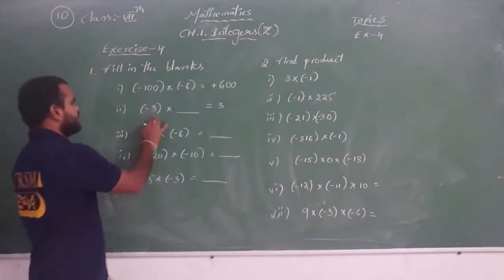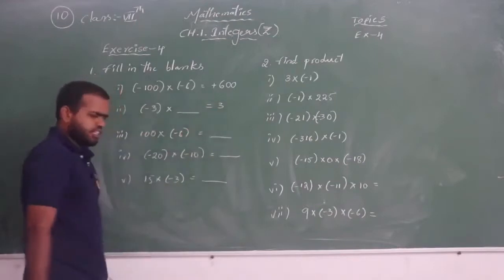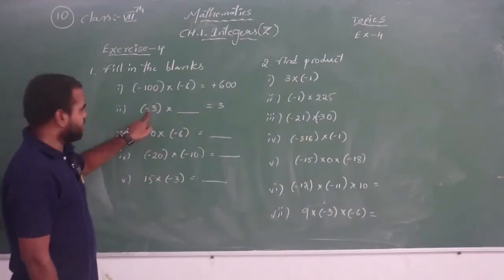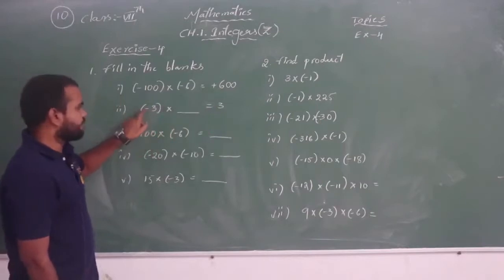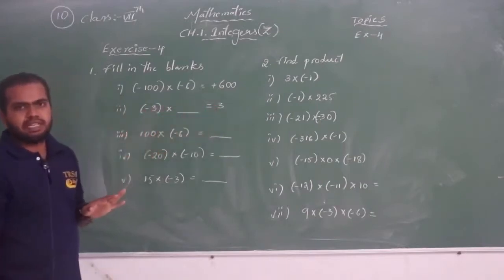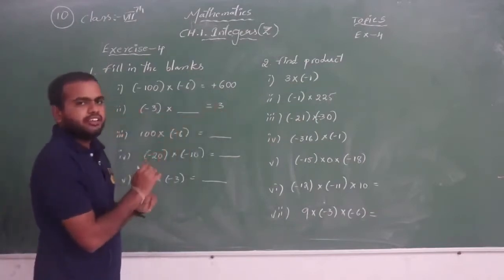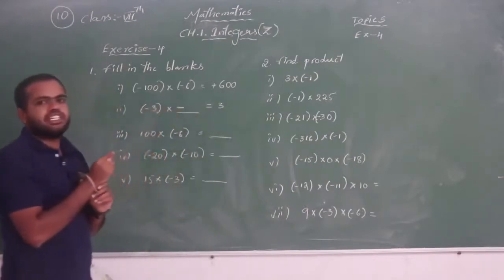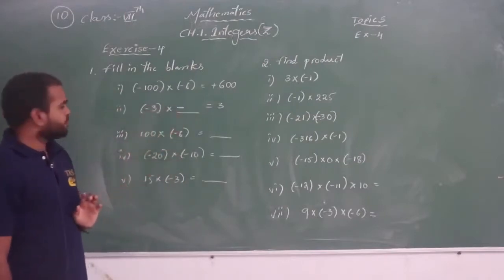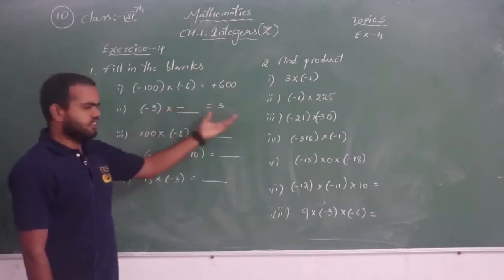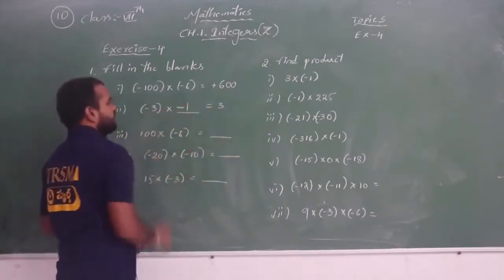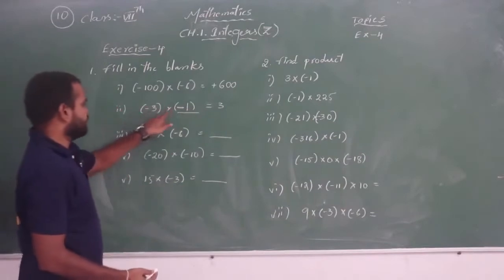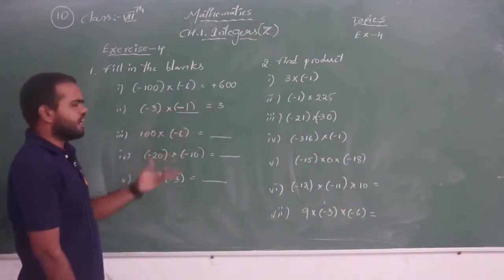Now see the second question: minus 3 into blank equals 3. Here we have to use an appropriate integer. We have minus 3 on one side and positive 3 as the result. When will the product be positive? When we multiply a negative integer with another negative integer. So the missing number must be a negative integer. In the 3 times table, 3 ones are 3, so the answer is minus 1. Minus 3 into minus 1 is plus 3.